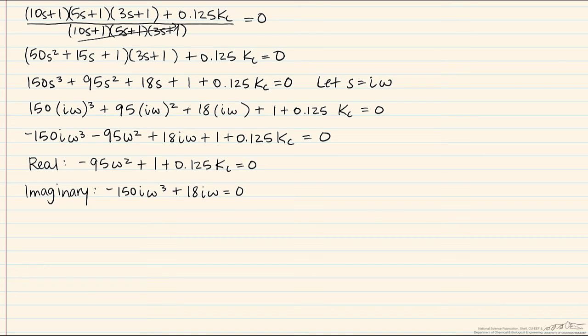If we look at our two equations, the real equation has two variables, omega and kc. Imaginary has just one, omega, so we'll start there. The i's cancel, one of the omega's cancel, that would be an omega of zero, which is immaterial in this analysis. So what we're left with here is that omega squared equals 18 over 150, or that omega is the square root of 18 over 150, which is approximately .346.